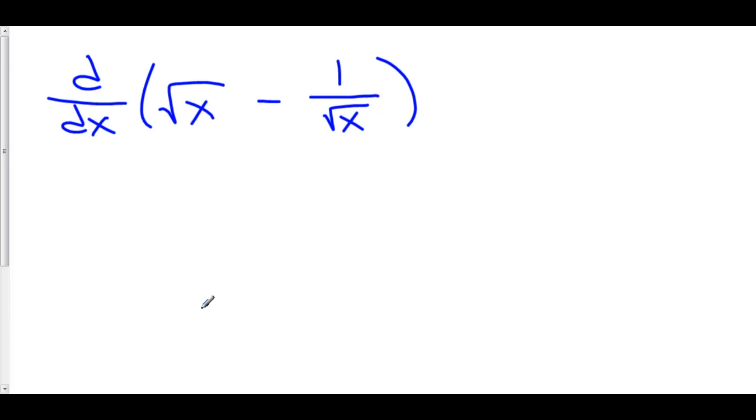Finally, square roots are actually exponents. The square root of x is x to the 1 half. So I'm going to rewrite this as the derivative of x to the 1 half minus 1 over x to the 1 half. When we have an exponent in our denominator, that's just a negative exponent. So I'm going to rewrite this as x to the negative 1 half. If we can rewrite our radicals as exponents, we can then take the derivative of them using power rule.